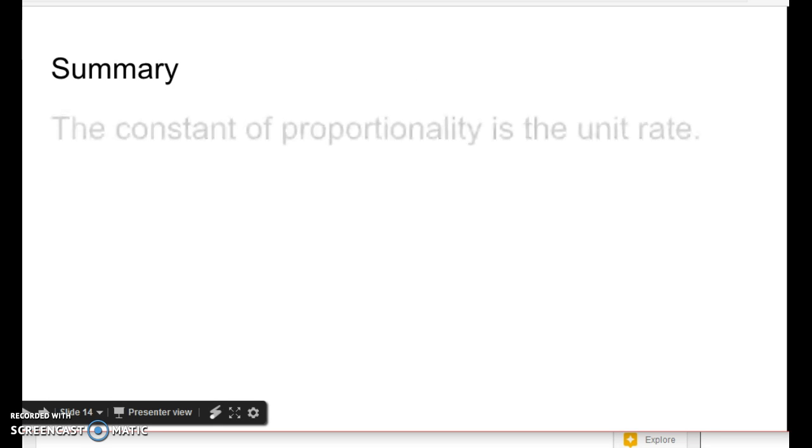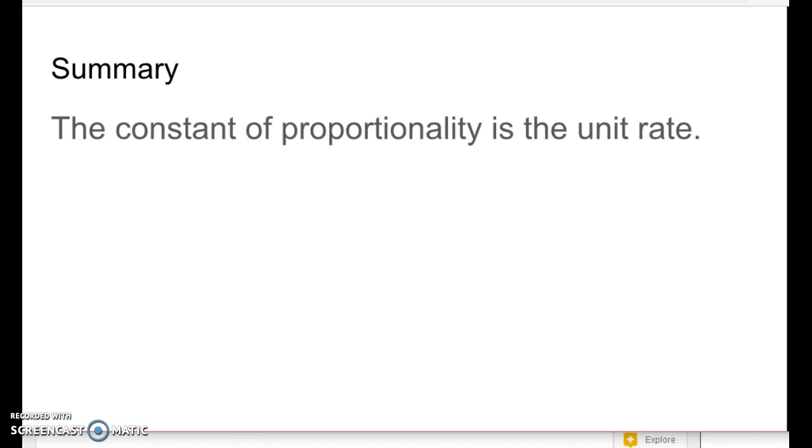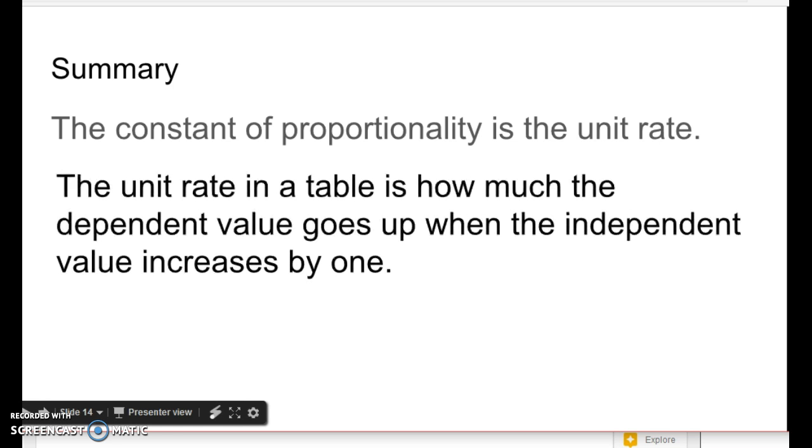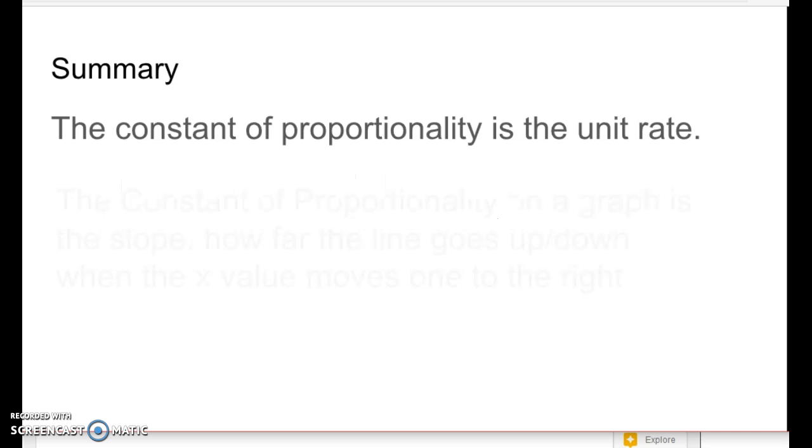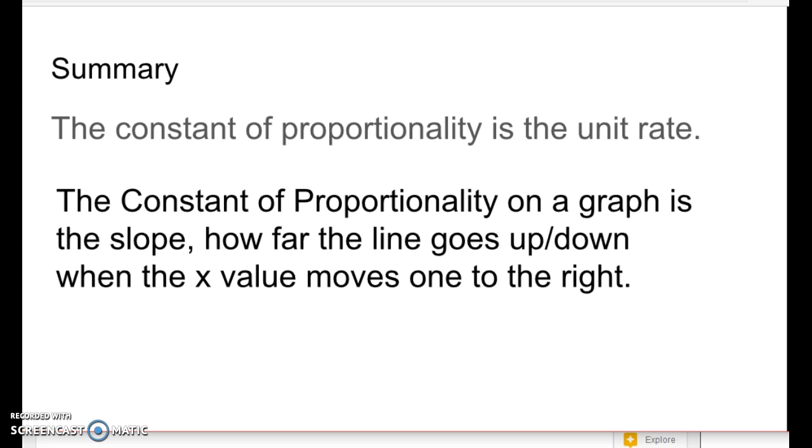So in summary, the constant of proportionality is the unit rate, but whatever is constant in your table, graph, or description. A unit rate in a table is how much the dependent value goes up when the independent value increases by 1. So when x goes up by 1, y goes up by 8 or whatever. A constant of proportionality in a graph is the slope of the graph. So how far the line goes up or down when the x value moves one value to the right.